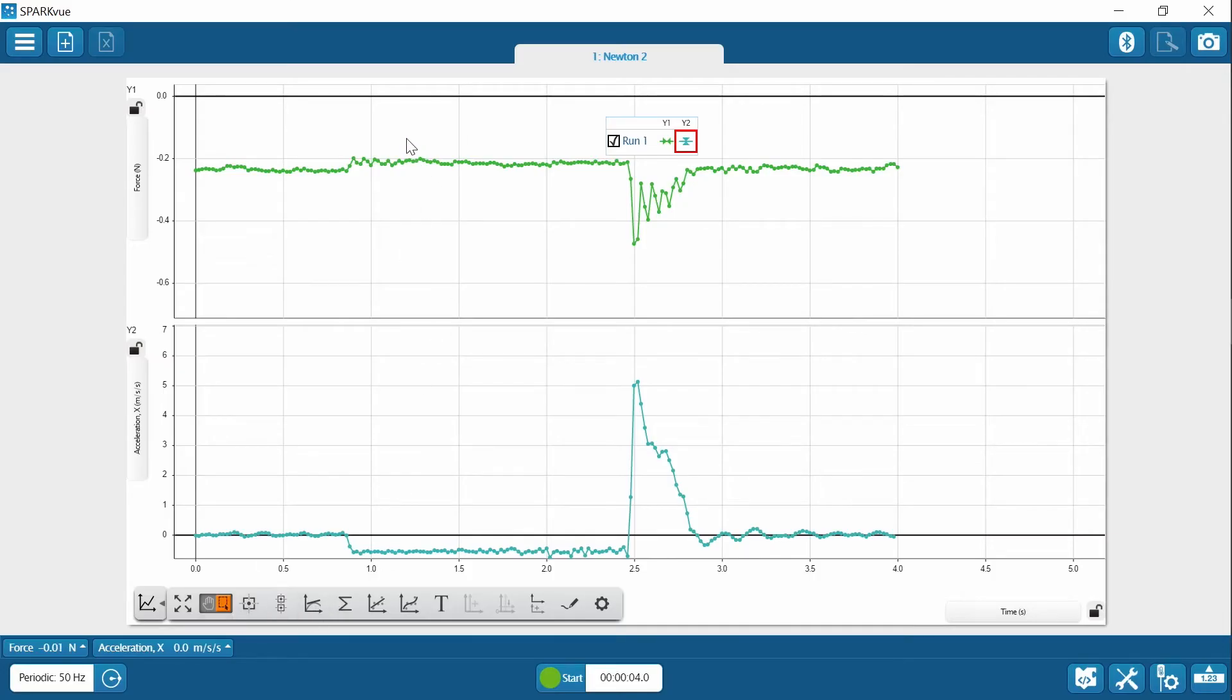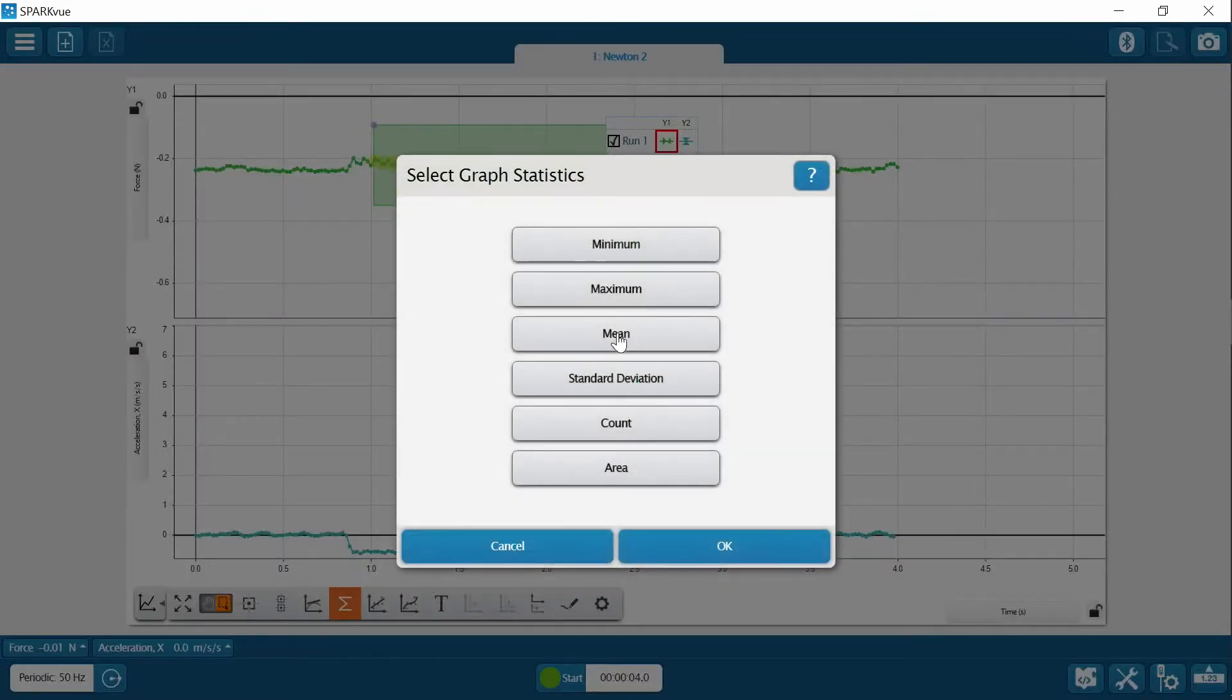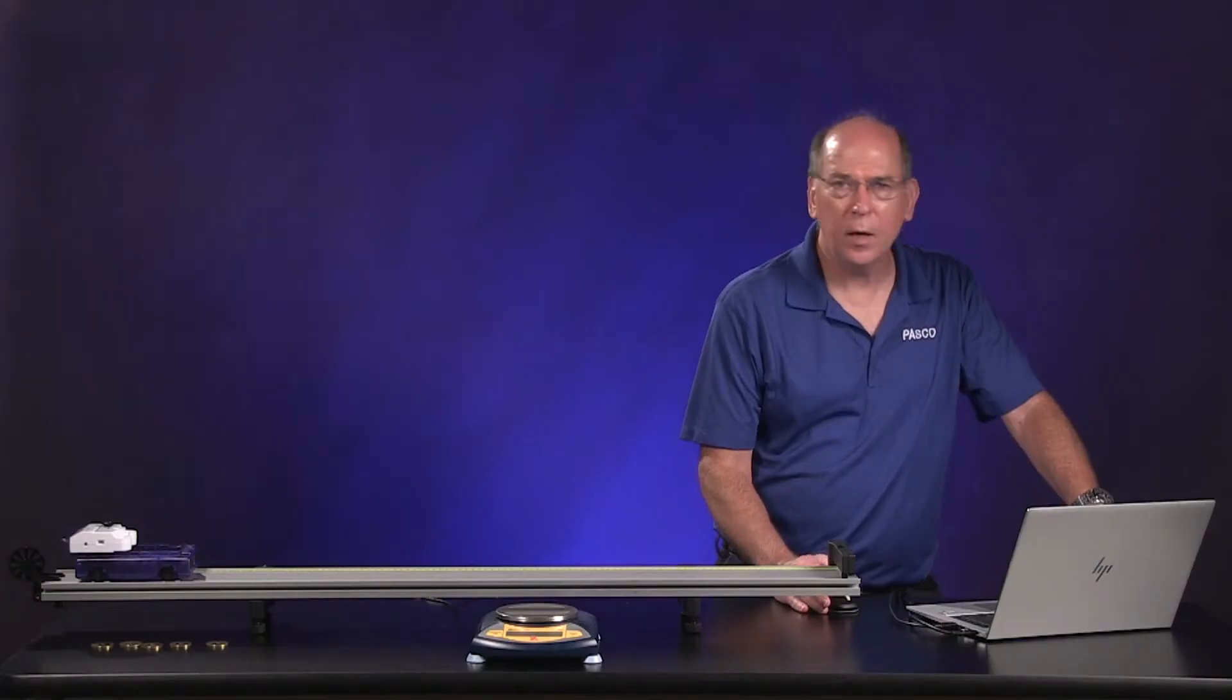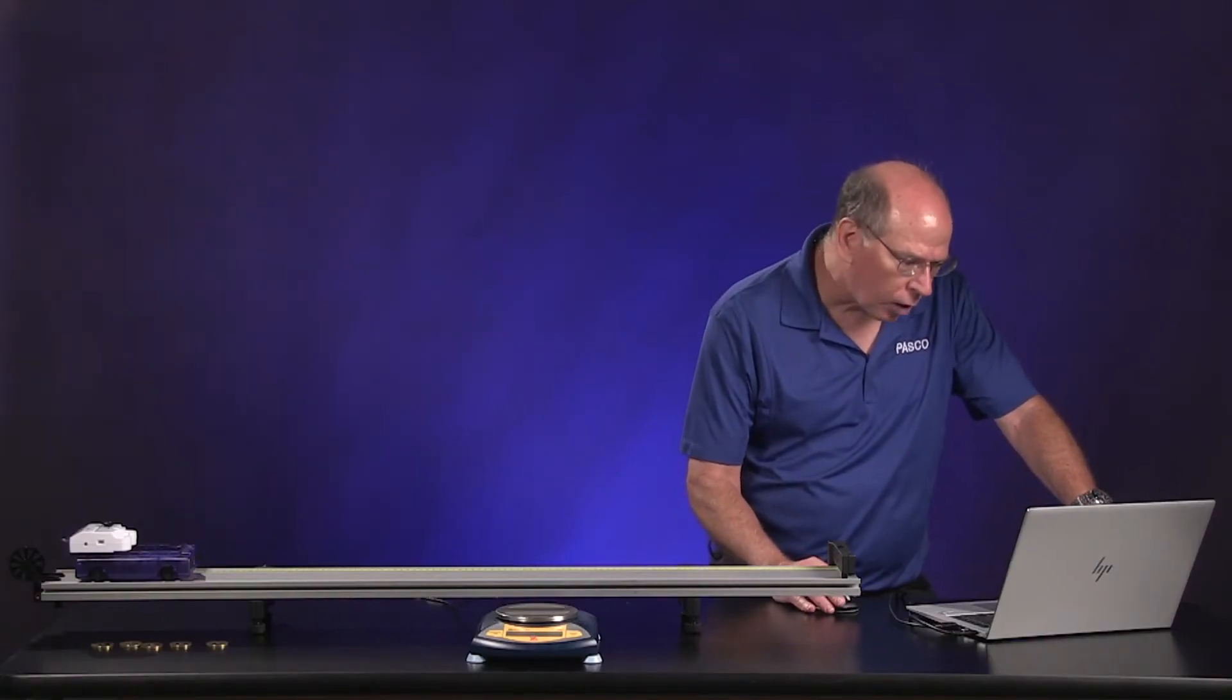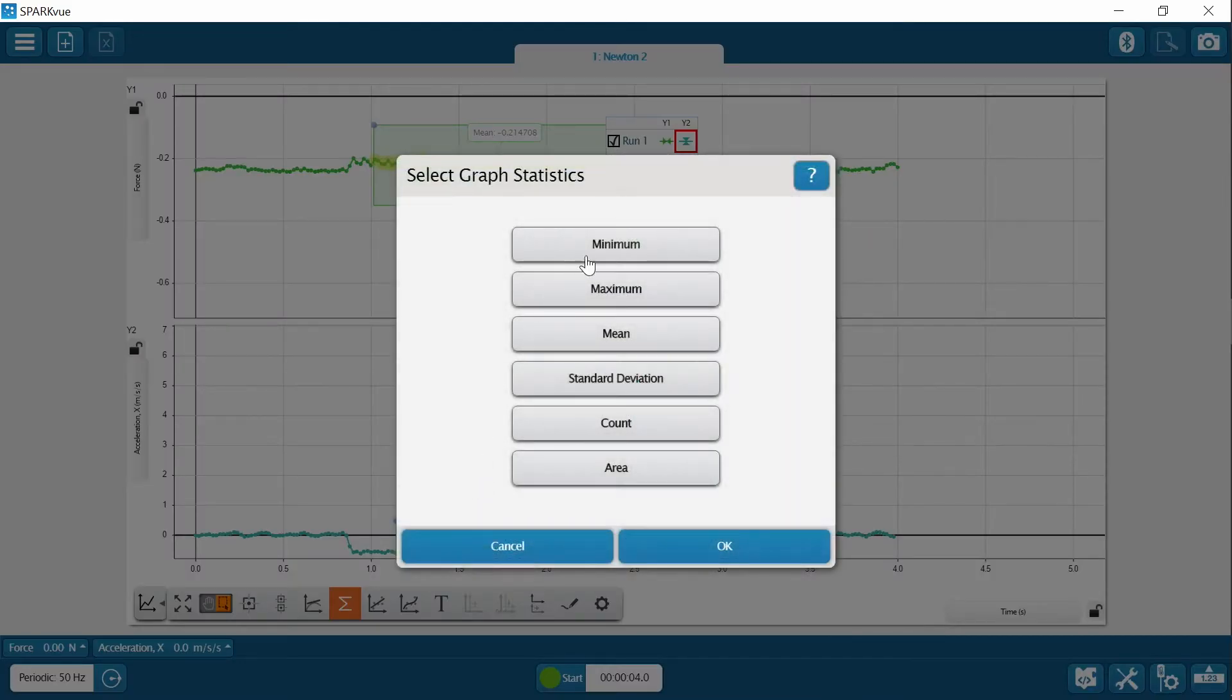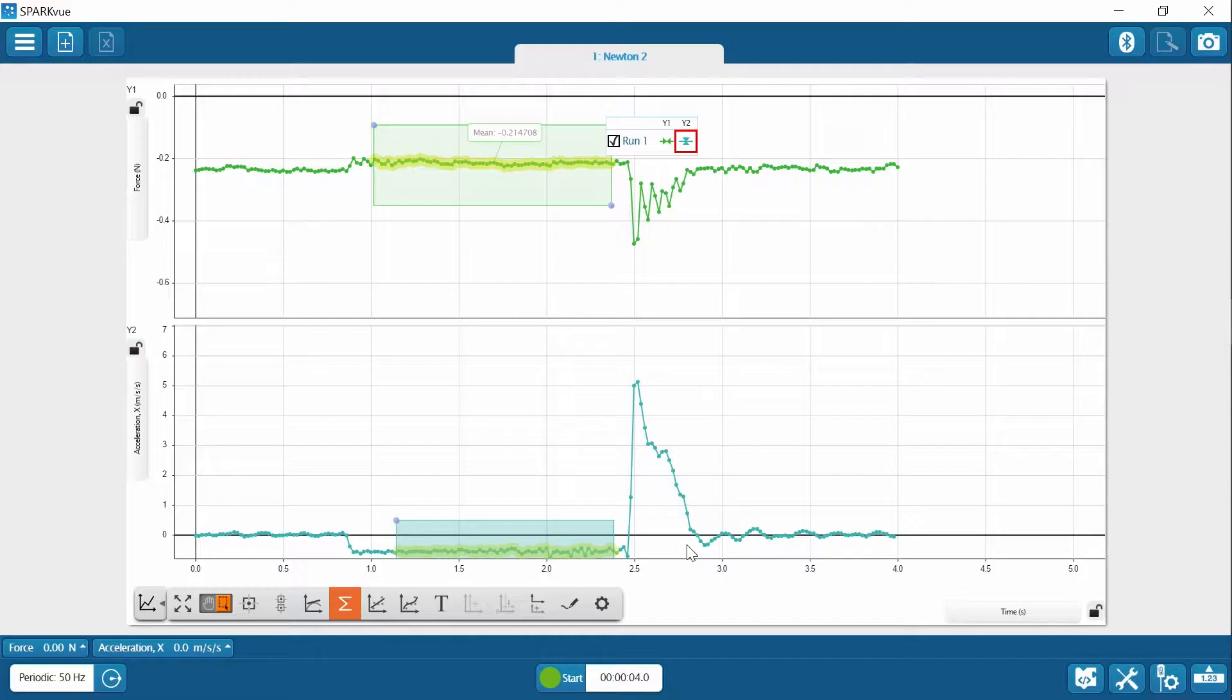Here we go. I just select that part where it was moving and then get the mean value. You can see it here on the screen. You'll be doing that yourself. Then for the acceleration, I want to make sure I do that for the same time period. Select the mean value and then we can get that there.